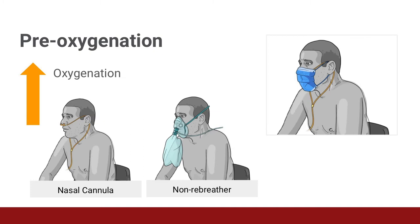Pre-oxygenation aims to increase the oxygen reservoir of the lungs to extend the safe apnea time. The goal is to decrease the need for bag valve mask ventilation after induction and paralysis, thereby minimizing the risk of aspiration from stomach insufflation during bagging when the patient is paralyzed.